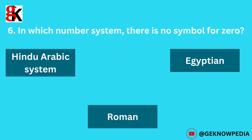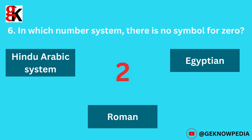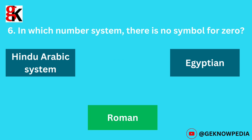Sixth question. In which number system is there no symbol for 0? Options: Hindu-Arabic system, Egyptian, Roman. The correct answer is Roman.